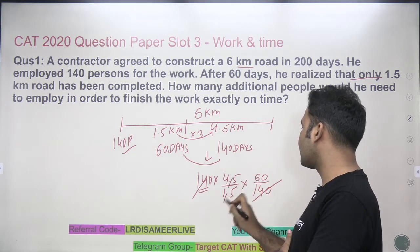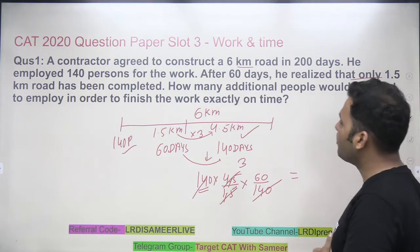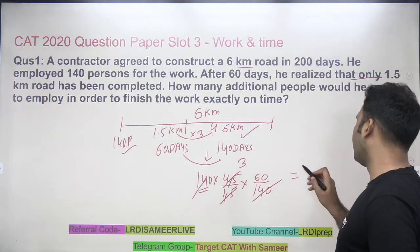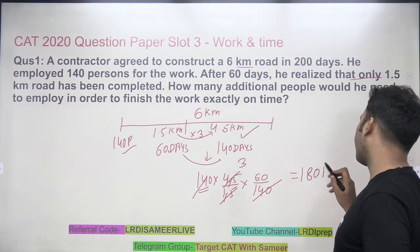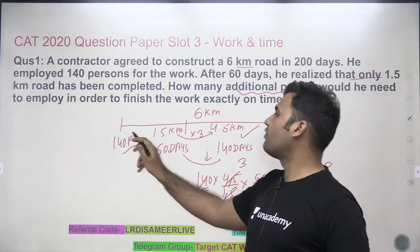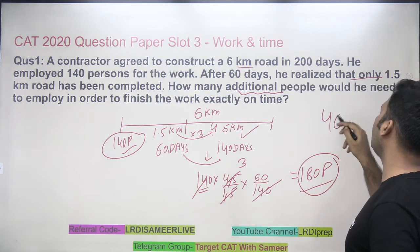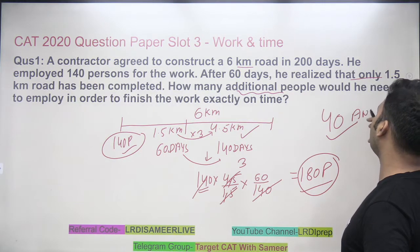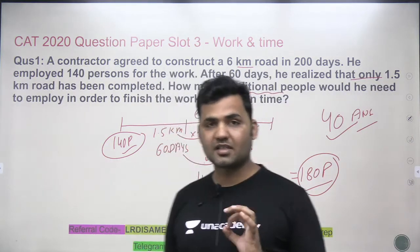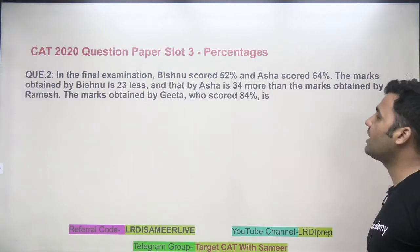This gets cancelled, this will get cancelled, this cancelled at 3. So now if you have 4.5 kilometers road, you have to construct in the rest of the 140 days, you will require 180 persons. And the question is asking us how many additional persons will be required. 140 persons are already there. So additional number of persons required will be 40. So the answer to the question is 40. This was a CAT question of 2020 slot 3, a theta question, a simplest one, very simple.